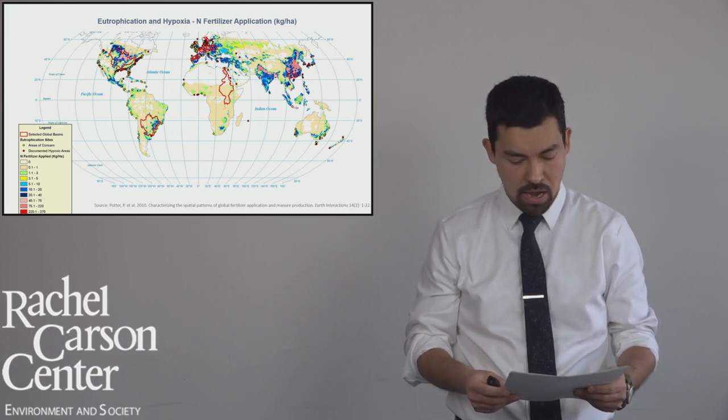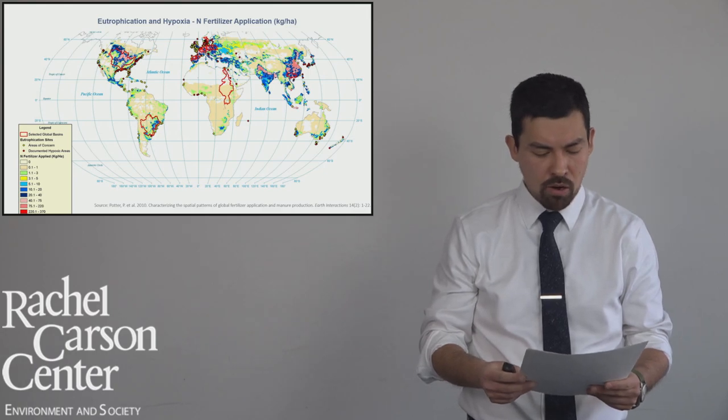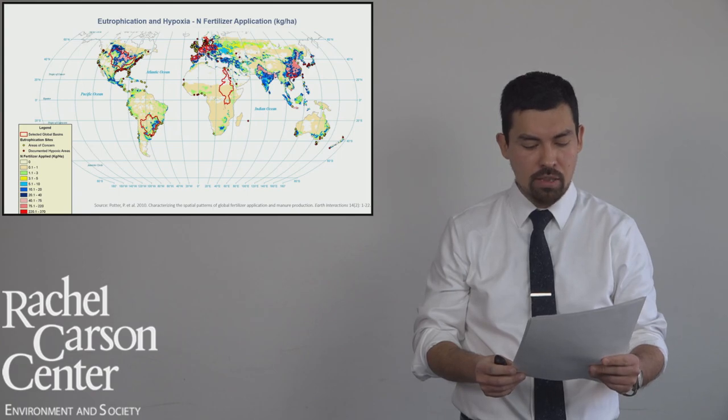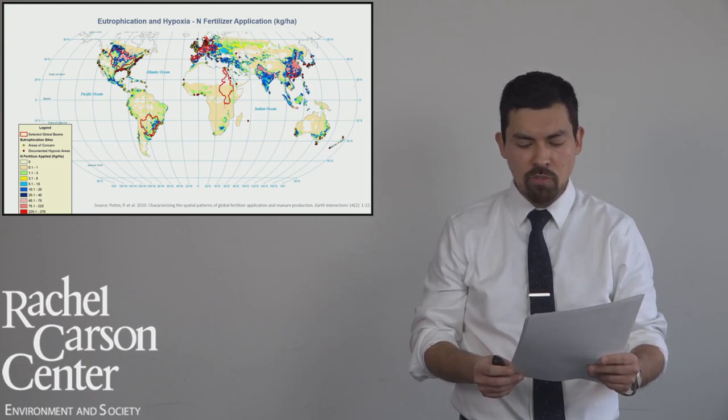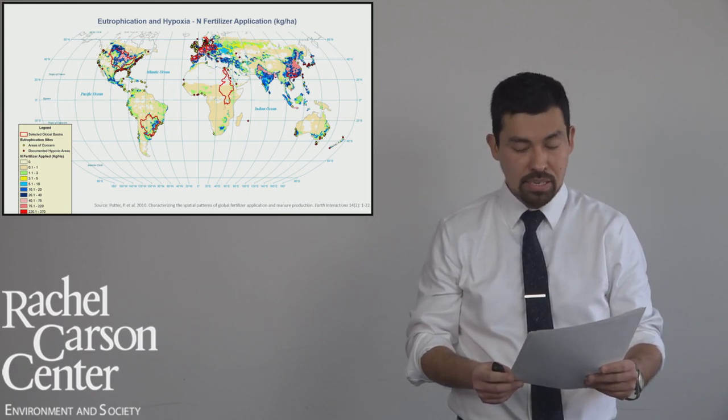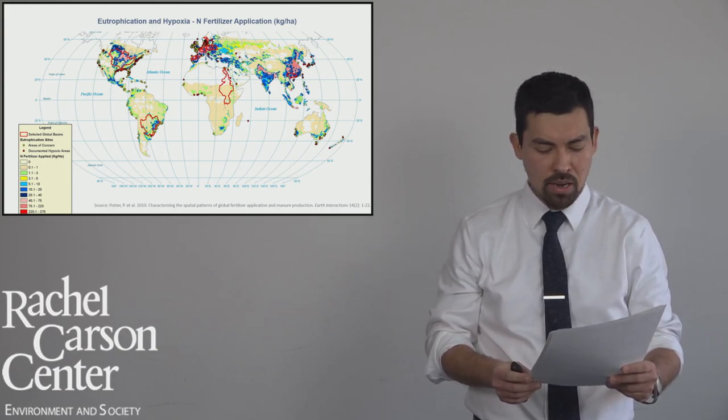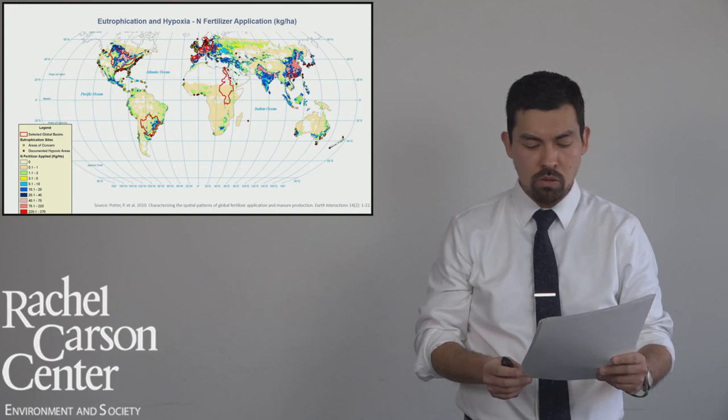At the same time, as nitrogen moved from the field of agricultural development projects in the 1960s to become a governable species in the arena of global environmental governance in the 1970s and 1980s, scientific production on the negative impacts of nitrogen has also been unevenly distributed throughout this process.